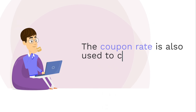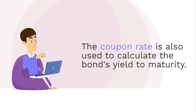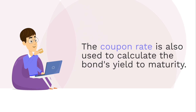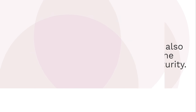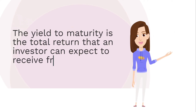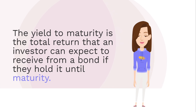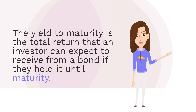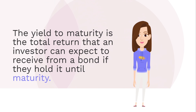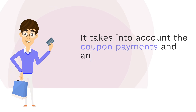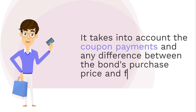The coupon rate is also used to calculate the bond's yield to maturity. The yield to maturity is the total return that an investor can expect to receive from a bond if they hold it until maturity. It takes into account the coupon payments and any difference between the bond's purchase price and face value.